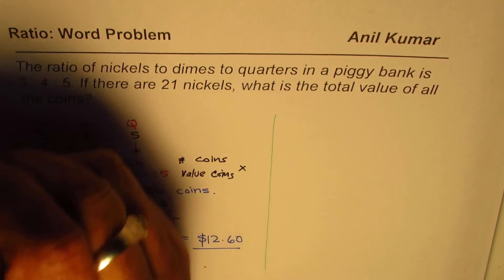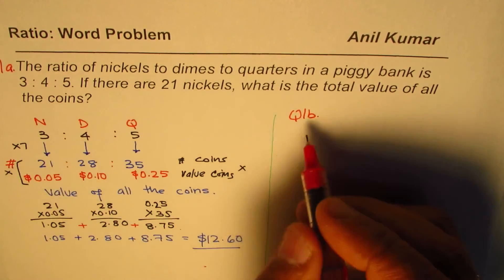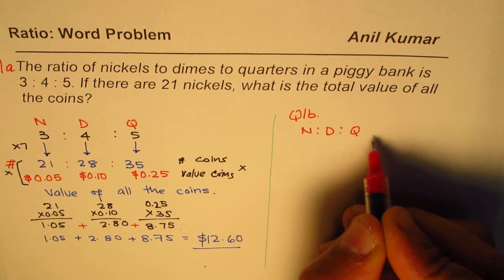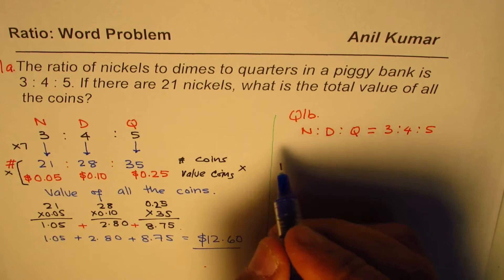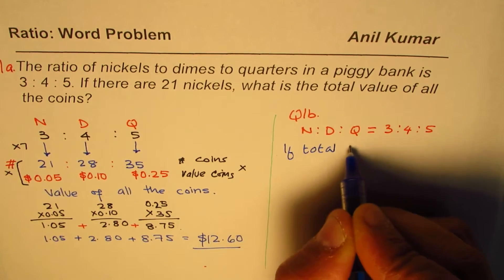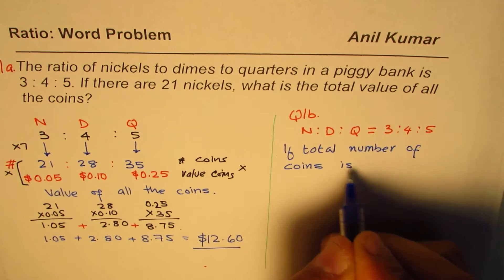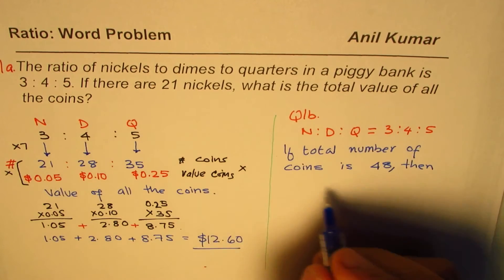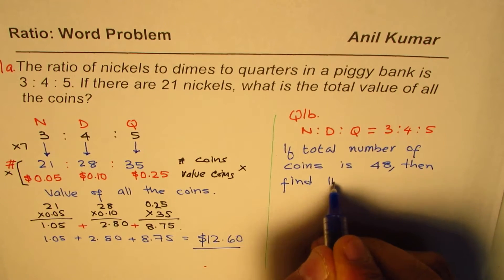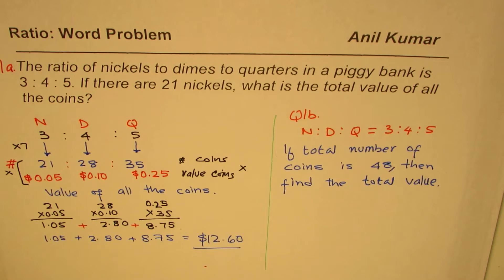Now here is a question for you — question 1B. The ratio of nickels to dimes to quarters is the same: 3 is to 4 is to 5. However, if the total number of coins is 48, find the total value. You can pause the video and answer this question. It's slightly more difficult — let's see if you can get that one.